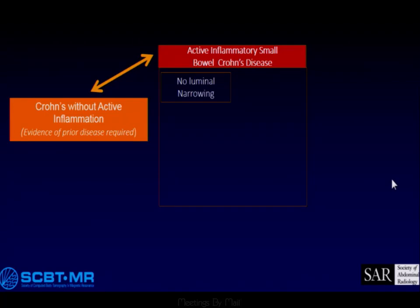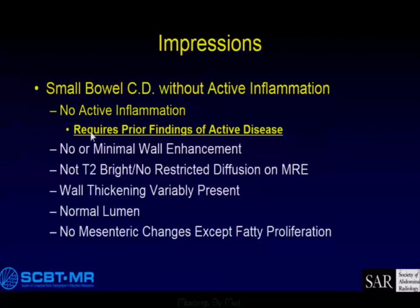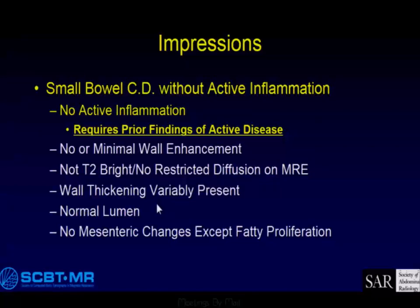Crohn's without active inflammation: the patient has known Crohn's, so there's evidence of prior disease, but because of therapy the disease is no longer active. It requires prior findings of active disease, no or minimal wall enhancement, no T2 bright or restricted diffusion. Wall thickening is variably present — most of the time it is, but it's not significant. The lumen is normal and there are no mesenteric changes.